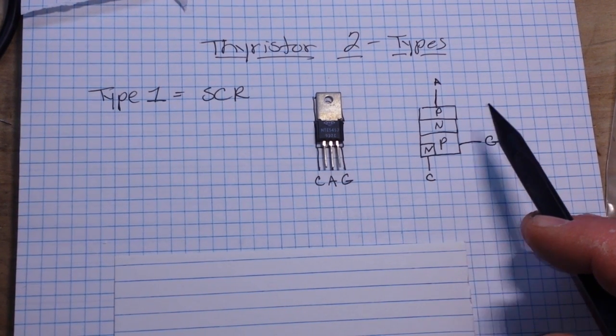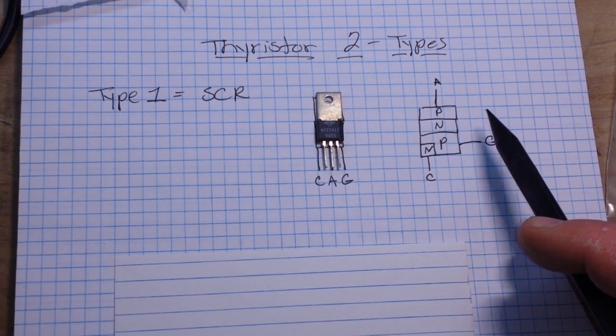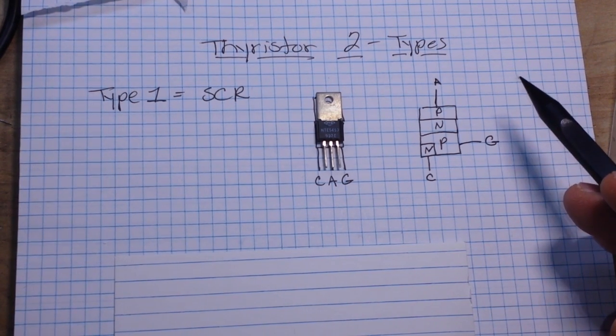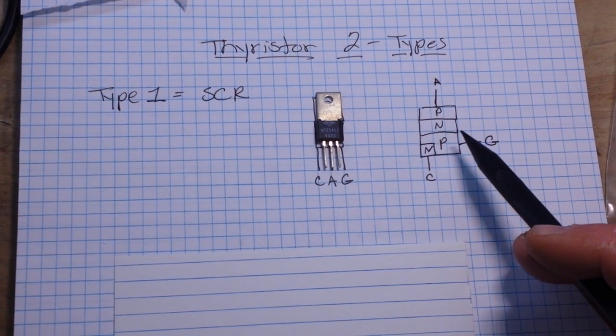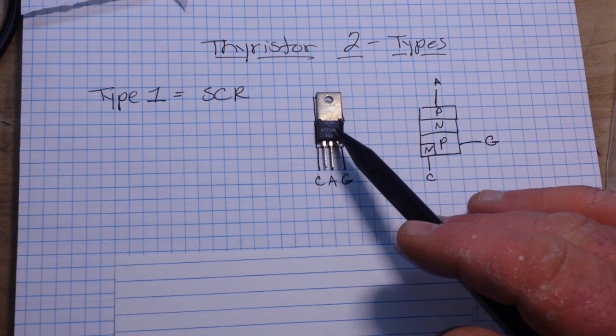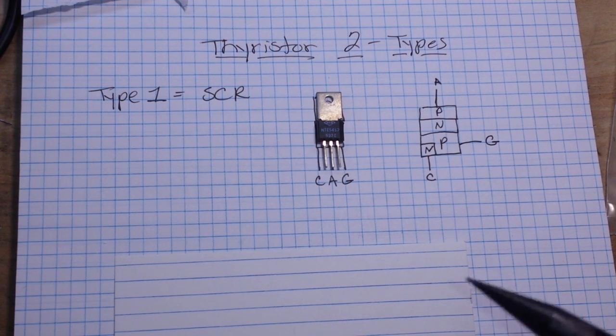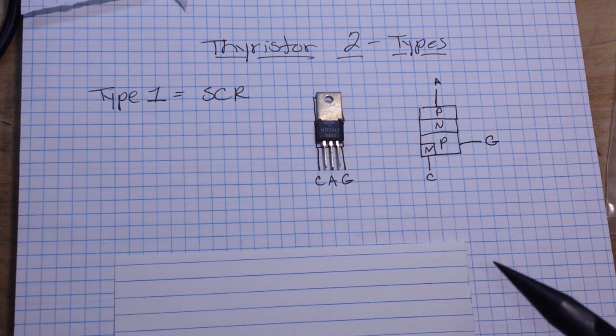Now a small gate current will forward bias the middle PN junction and allow a larger current to flow. Does that make sense to you? Now keep in mind, here's another difference from a transistor: when you turn this on it stays on unless you do something about it. Now that could be breaking the circuit or using, you know, breaking the circuit. It doesn't matter if you use a switch or whatever else you use.